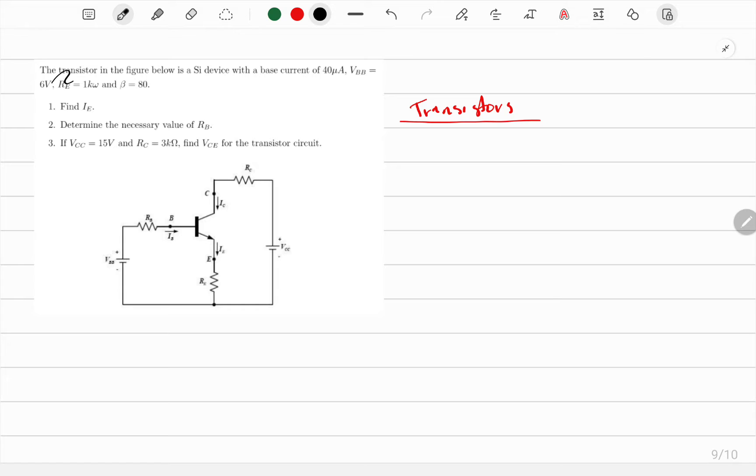Let's get started with this video. The transistor in the figure below is a silicon device with a base current of 40 times 10 to the negative 6, VPP is 6V, and RE resistance in the emitter will be 1 kilo ohms. They meant ohms, not watts. And the gain β will be 80.